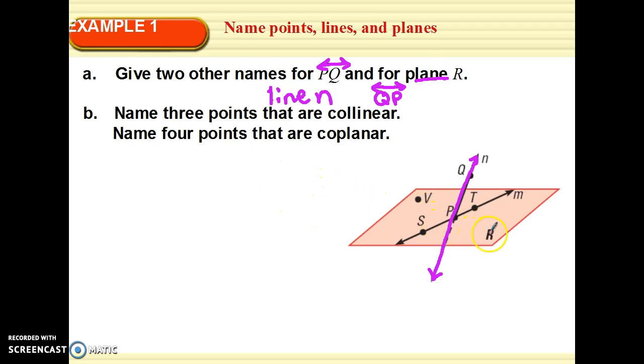Plane R. What is the name for plane R? We can either call it plane R because that italicized R in the corner says I'm plane R. The other way is to pick three non-collinear points. So we could call this plane SPV or plane PTV. Basically, we have to have three points not all on the same line. So you can pick two of these three points and V. So, SPV or PTV or STV. Those are the three options.